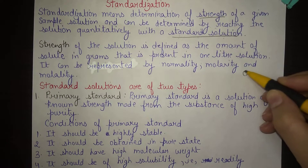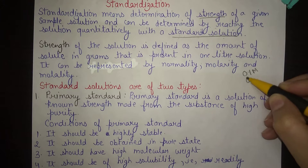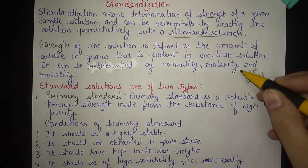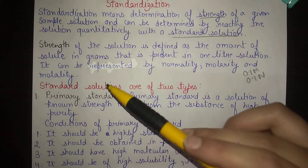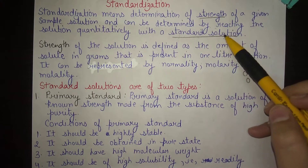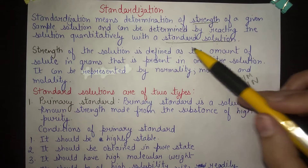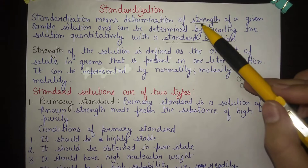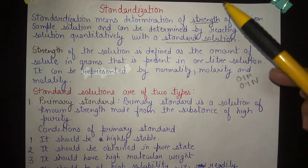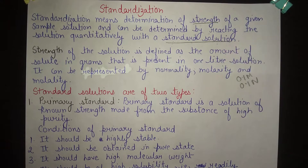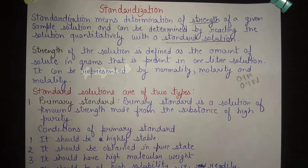Strength can be represented by normality, molarity, and molality. Strength is basically the concentration of our solution — like a 0.1 molar solution or 0.1 normal solution. Standard solution means the solution whose strength we know. The solution whose concentration or strength we already know is called the standard solution. Titration is one of the ways by which we can standardize our solution.